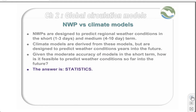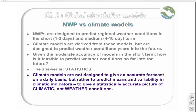The simple answer is statistics. Climate models are not designed to give an accurate forecast on a daily basis, but rather to predict means and variability in climate indicators, to give a statistically accurate picture of climate, not weather conditions.